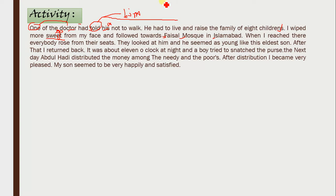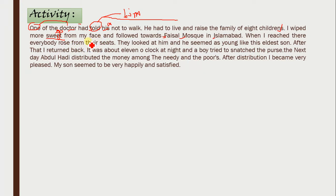'When I reached there, everybody rose from their seat.' The mistake is 'their' — it should be 'his seat.' Whenever the indefinite pronoun everybody, somebody, or nobody is used, the pronoun must be singular. 'Everybody rose from his seat.' Everybody is always treated as singular — 'everybody is working,' 'was working.'